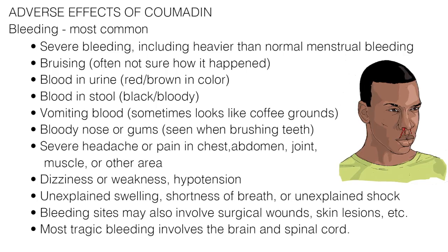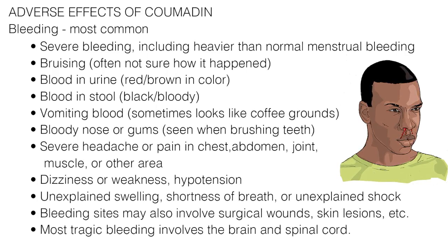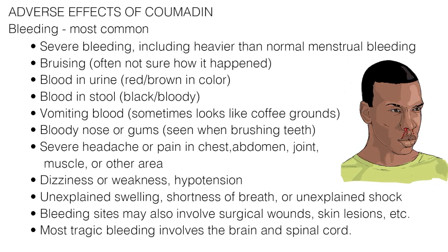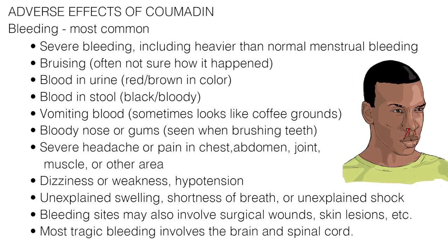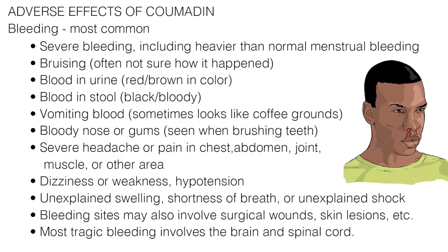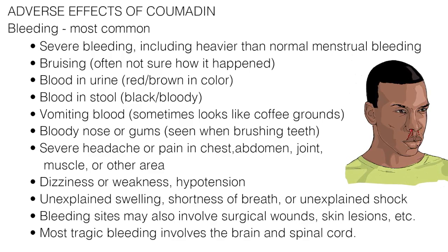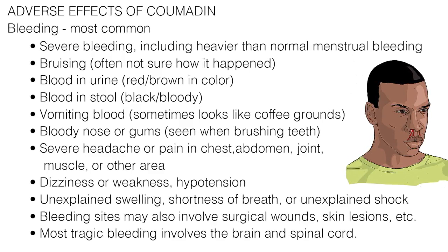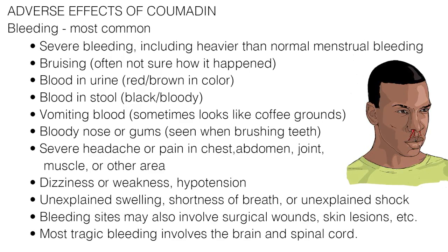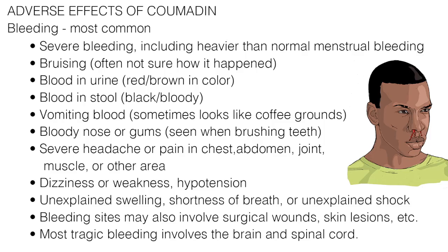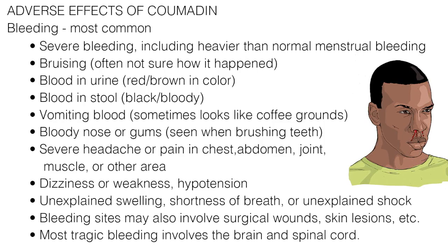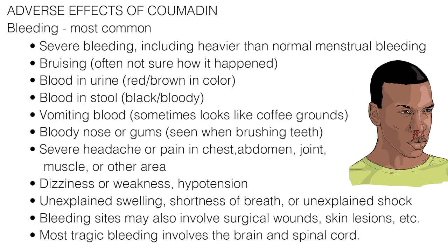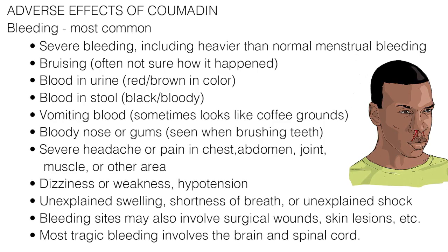joint, muscle, or other area, dizziness or weakness, hypotension, unexplained swelling, shortness of breath, or unexplained shock. Bleeding sites may also involve surgical wounds, skin lesions, or injection sites. The most tragic bleeding involves the brain and spinal cord.